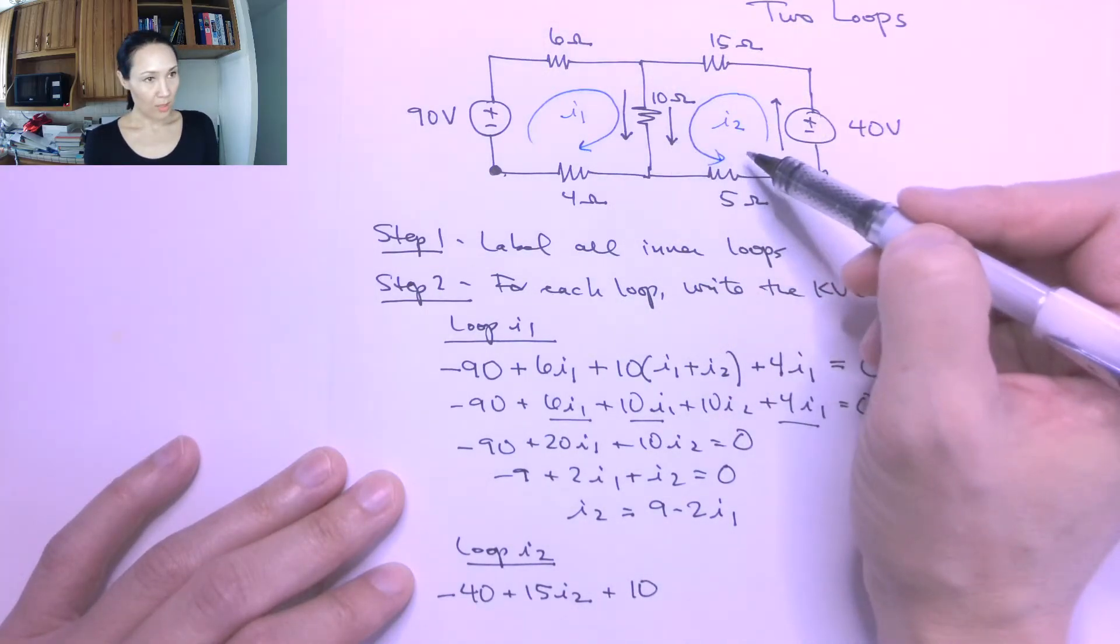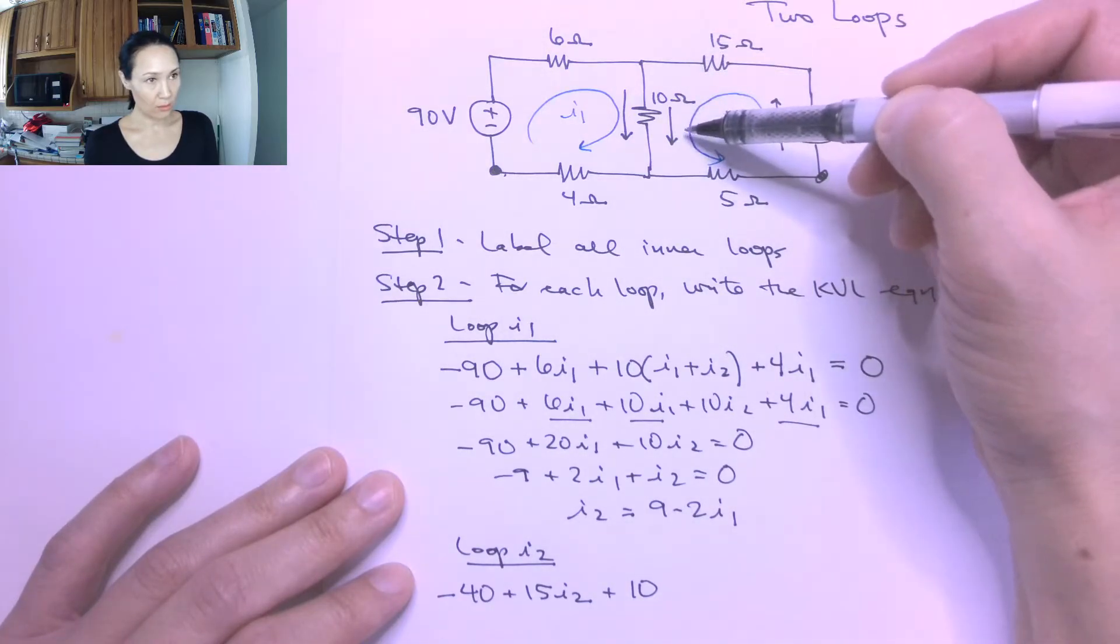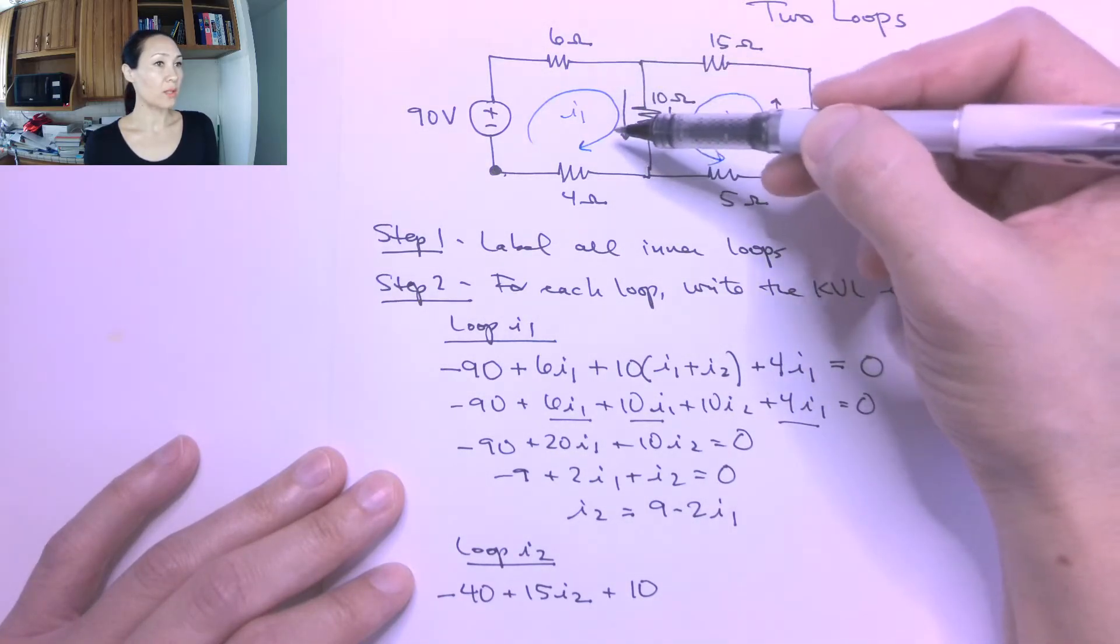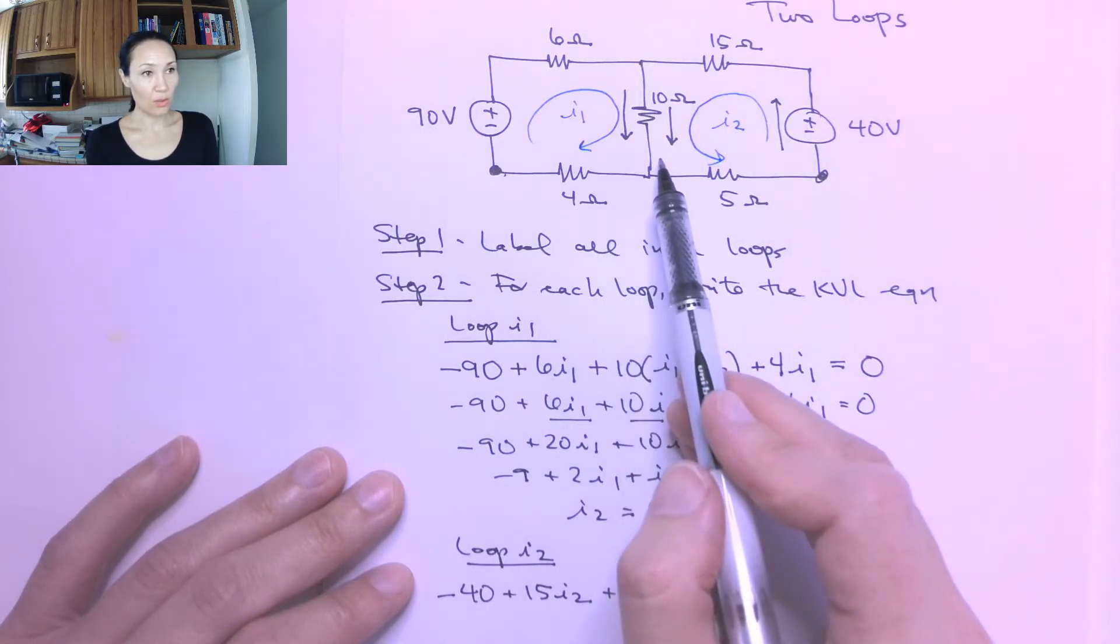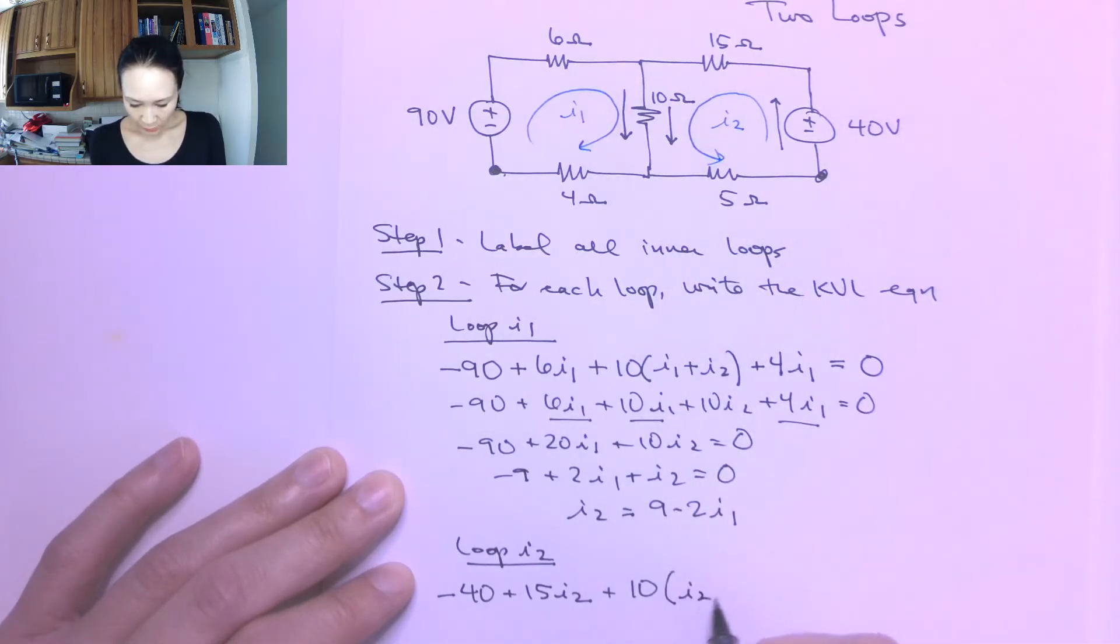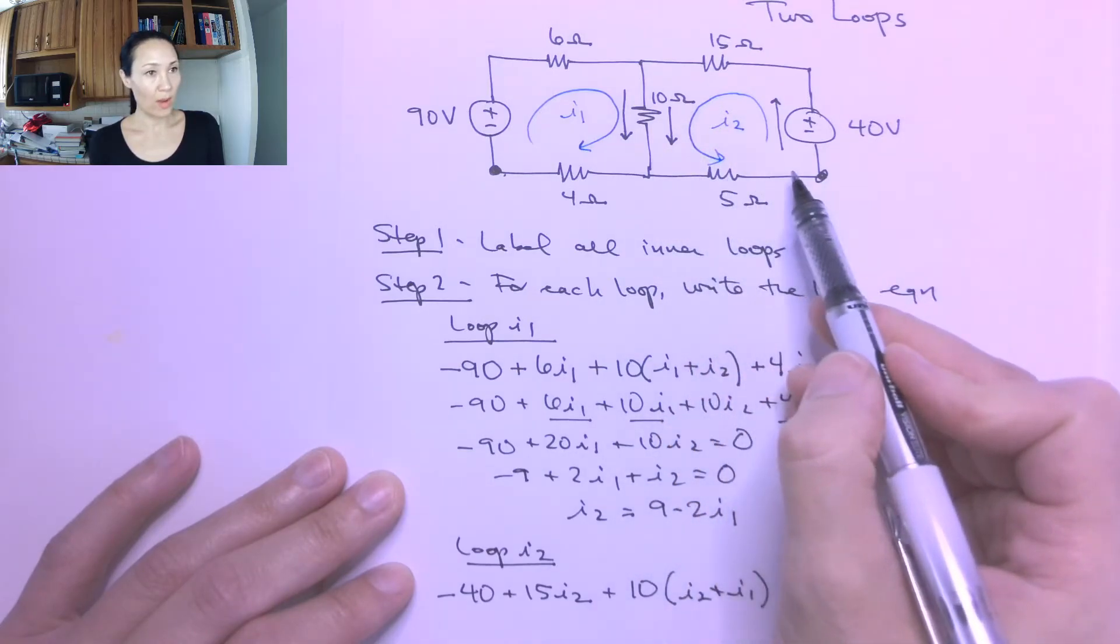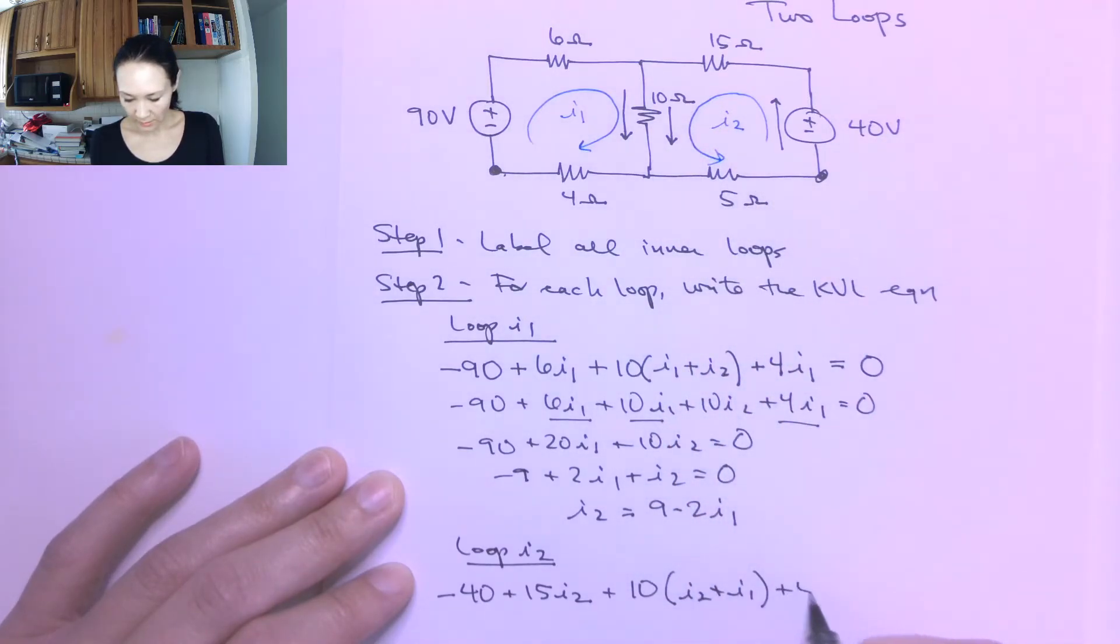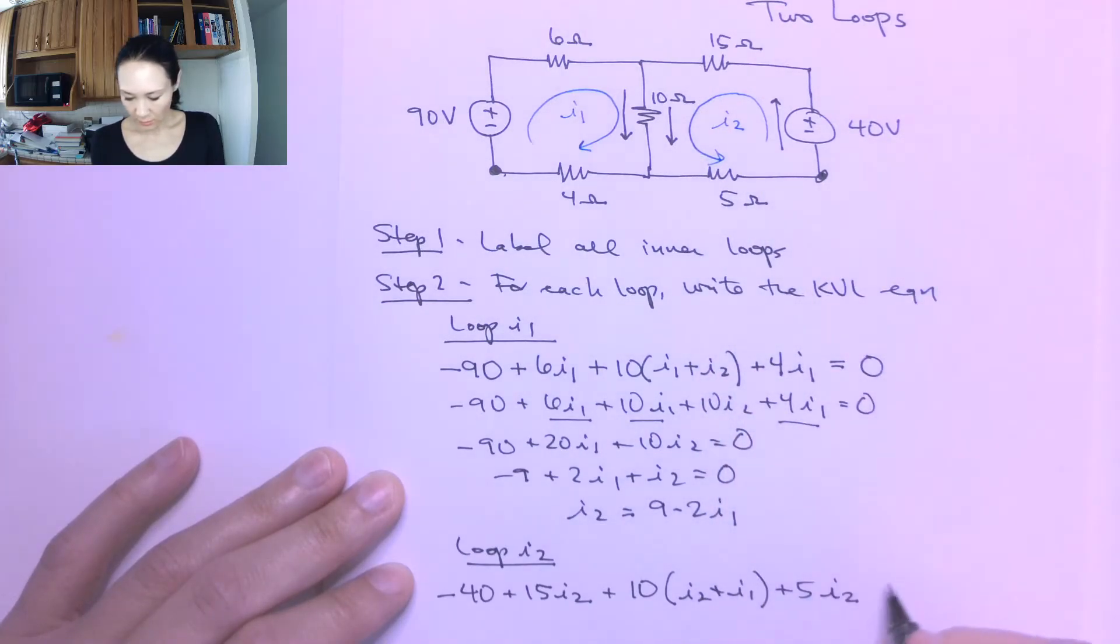The next thing I encounter is this 10 ohm resistor. So currently I'm doing the I2 loop. I2 is going in the down direction through this resistor, but I1 is also going in the down direction. Since they're in the same direction, these two currents are going to mesh and they're going to add. So this will be I2 plus I1. The next thing I encounter as I go around the I2 loop is the 5 ohm resistor. And the only current touching that is I2. And now finally I'm back to where I started. So I complete my equation with an equals 0 by KVL.